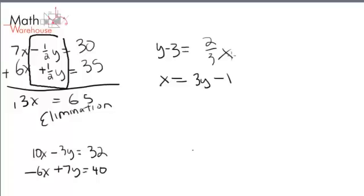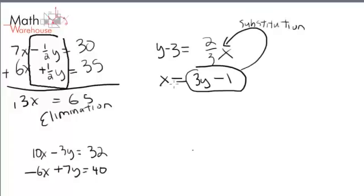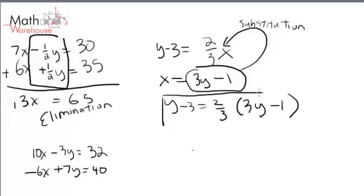Here we've got y minus 3 equals 2/3 x. And x equals 3y minus 1. So, we've got x equals a bunch of y's and numbers. That is just begging to be substituted in here. So, you would end up with y minus 3 equals 2/3 of, instead of x, we're going to write 3y minus 1. We now have one equation, one unknown. We can solve for y in this case. Once we know y, punch that back in to get the x value. So, this is a substitution question.